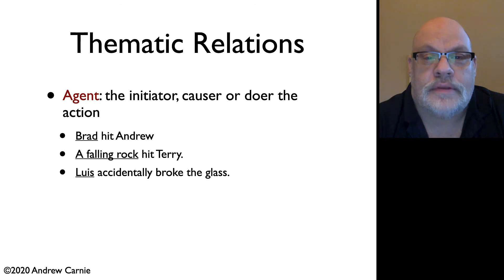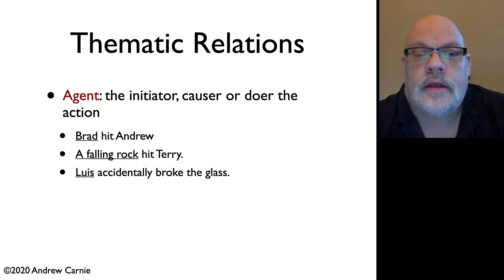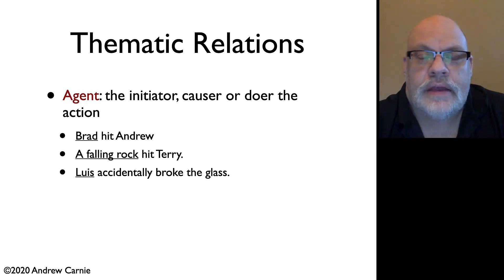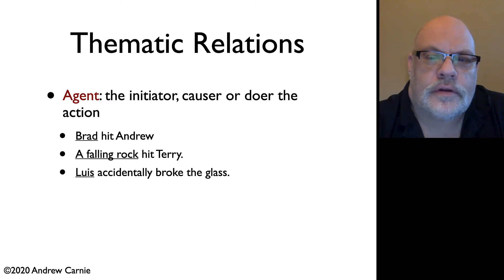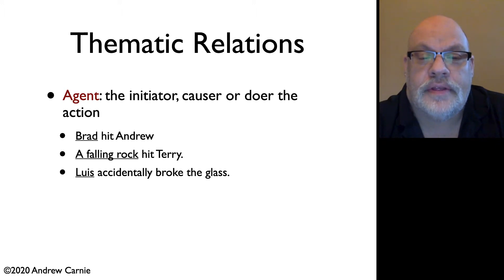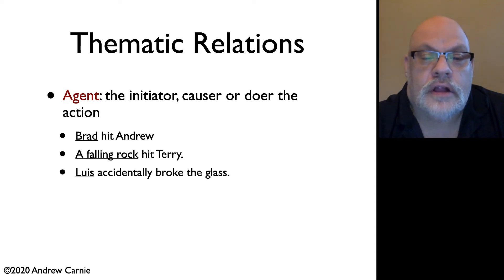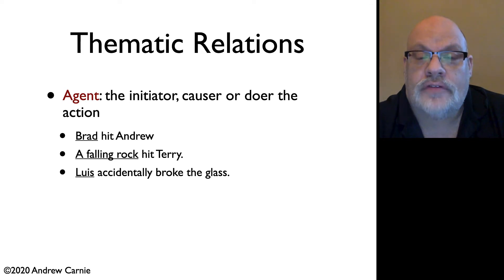So, let's look at some examples. The first example we're going to look at is the thematic relation of agent. The agent is the initiator, the causer, or the doer of an action. For example, in the sentence 'Brad hit Andrew,' Brad is the agent. 'A falling rock hit Terry' — falling rock is the agent. 'Luis accidentally broke the glass' — Luis is the agent.